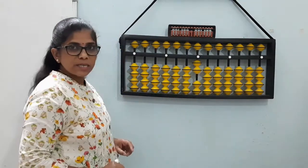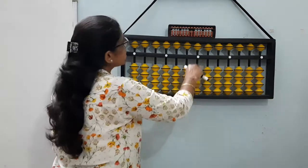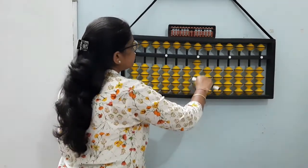This is clear. If two beads are touching, value is two. Three beads are touching, value is three. Nothing is touching, it's zero. So one, two, three, four.